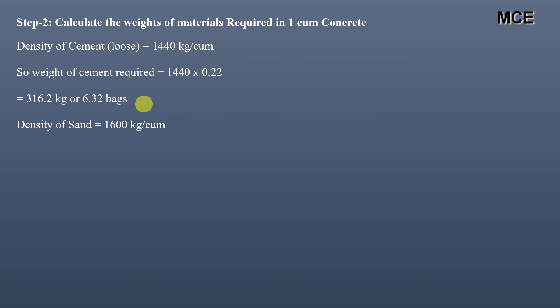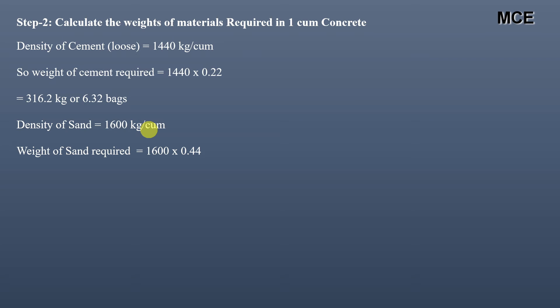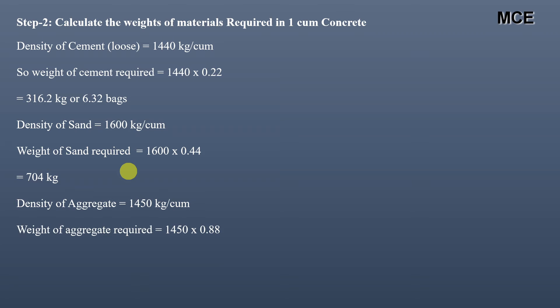Density of sand is 1600 kg per cubic meter, so weight of sand = 1600 × 0.44 = 704 kg. Density of aggregate is 1450 kg per cubic meter, so weight of aggregate = 1450 × 0.88 = 1276 kg of aggregates required to make one cubic meter of wet concrete.